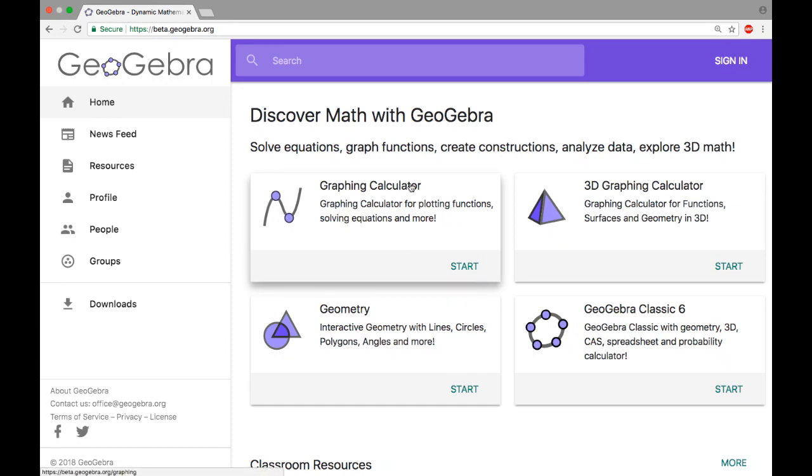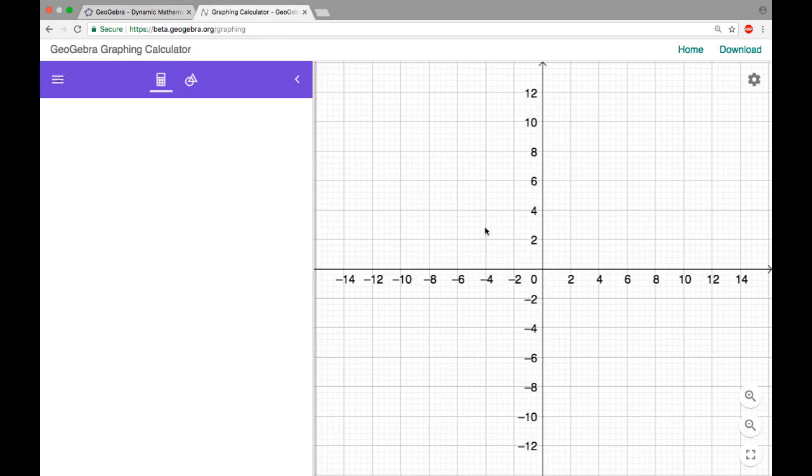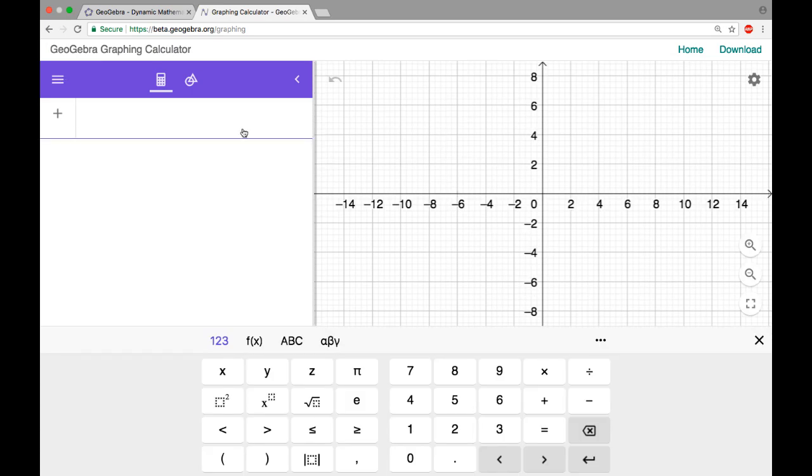In this video we're going to talk about how to use GeoGebra to graph some polar equations, and I'm at beta.geogebra.org. I pretty much always use the beta version. I don't think it actually makes a difference for this particular thing, so I'm gonna go to graphing calculator and click start.